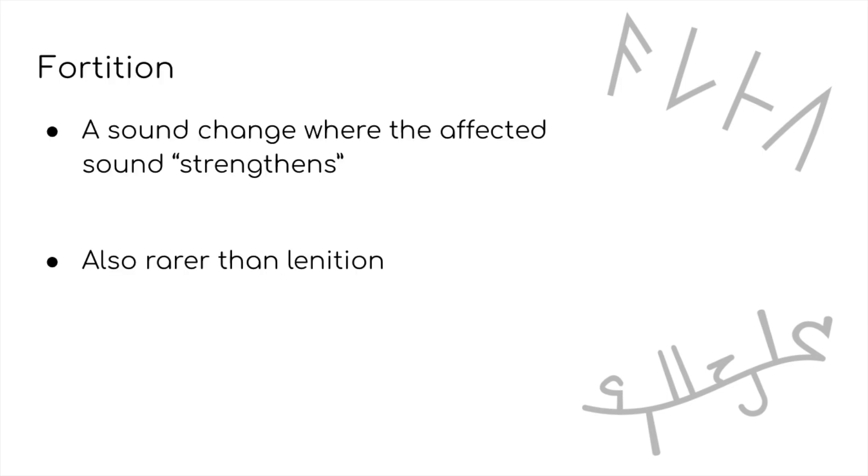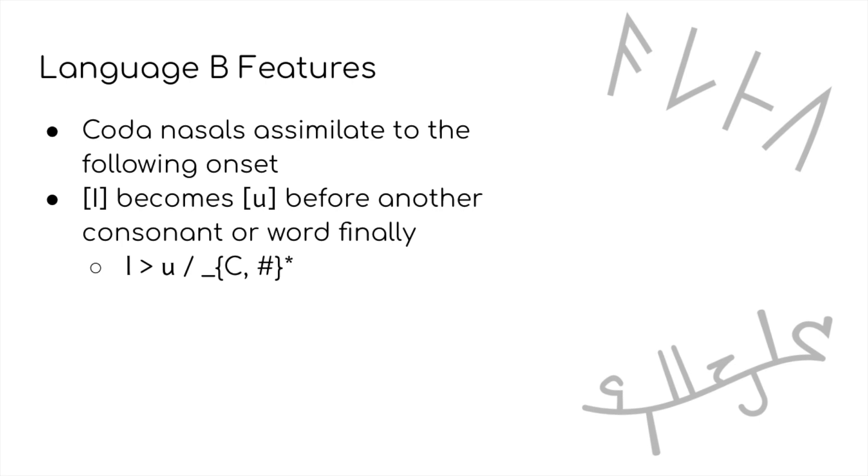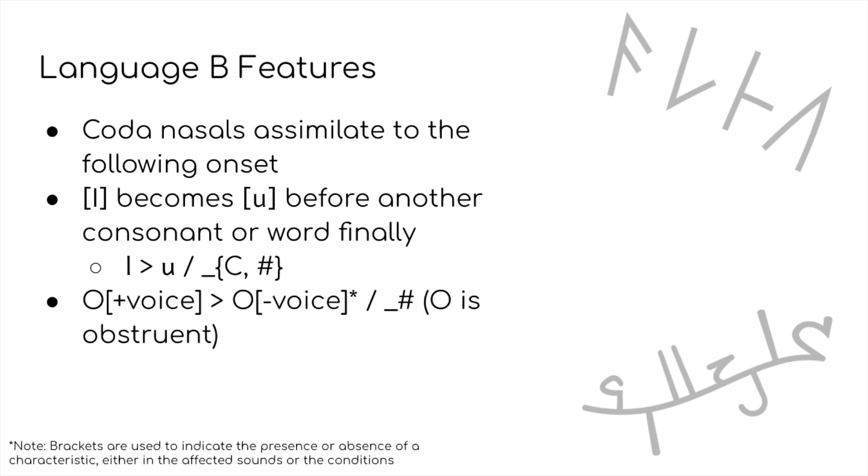Moving on to lenition's opposite, we have fortition. This involves a strengthening of the sound, or basically going back down on the sonority hierarchy. One very common form of this is final obstruent devoicing. As the name suggests, this change involves any voiced obstruents becoming voiceless at the end of words. This can be seen in languages like German, where words like Rat, meaning advice, and Rad, meaning wheel, are homophones. Since language A doesn't have any voicing, let's add this to language B.